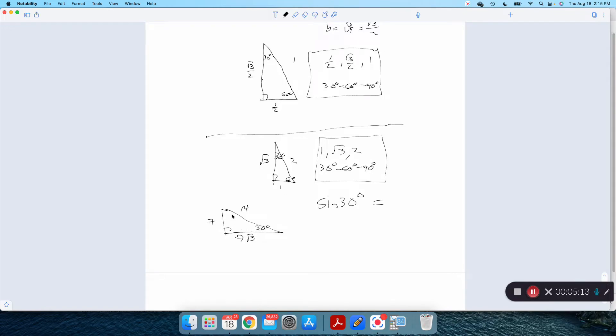Sine of 30 is opposite over hypotenuse, 7 over 14. Those are all a half. Sine of 30 is a half. Memorize that. That is going to come up a thousand times over the next couple of months. Sine of 30 is a half.